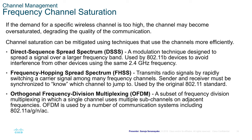Frequency Hopping Spread Spectrum (FHSS) is a system where radio signals are transmitted by rapidly switching a carrier signal among many frequency channels. The sender and receiver must be synchronized to know which channels to jump to, and it is used by the original 802.11b standards. Orthogonal Frequency Division Multiplexing (OFDM) is a subset of frequency division multiplexing in which a single channel uses multiple sub-channel signals on adjacent frequencies, used by 802.11a, g, n, and ac standards.